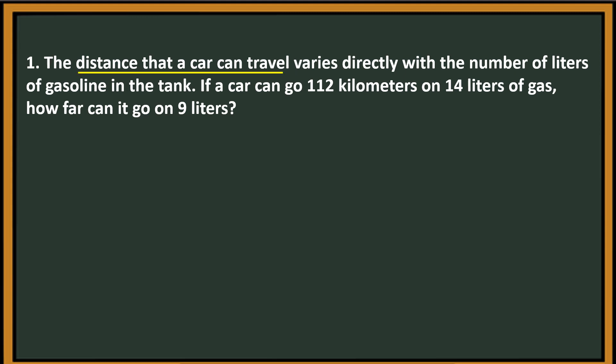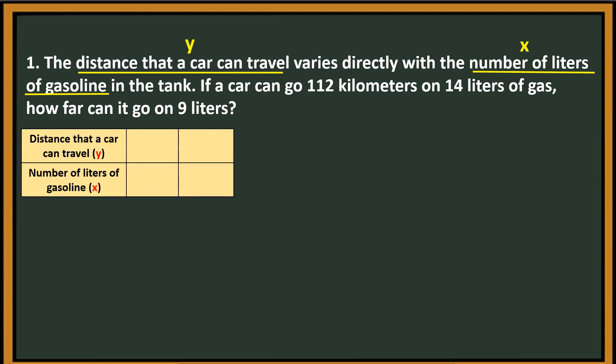First, we're going to assign variables. Distance that a car can travel — I'm going to use Y. Number of liters of gasoline — I'm going to use X. For the table: distance that a car can travel is Y, and number of liters of gasoline is X. Given: 112 kilometers on 14 liters of gas.